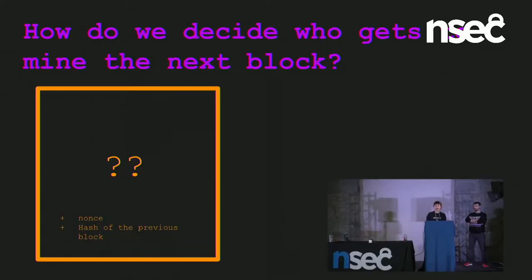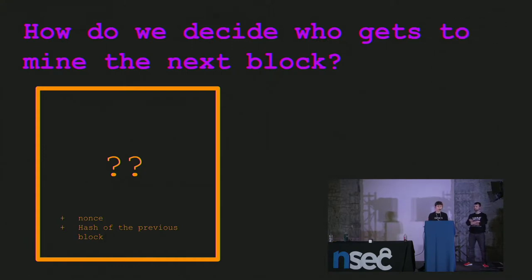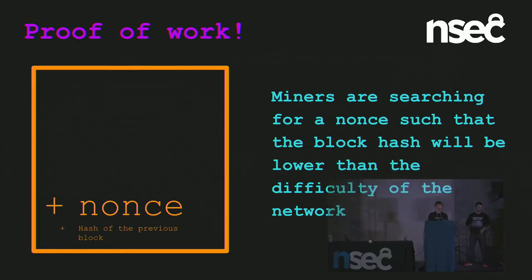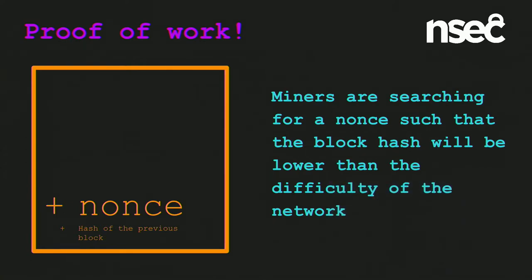We have this blockchain being maintained by miners, who create blocks and receive a payout for finding blocks. The answer to who gets to do that is proof-of-work mining. The miners are searching for a nonce that, when added to the block data and hashed, results in a hash lower than the difficulty of the network. The difficulty is automatically adjusted based on the available hash rate, and the goal is to keep blocks coming in at a constant, dependable time.